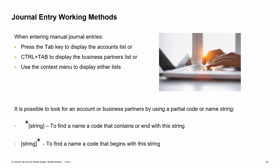When entering manual journal entries, in each line, place the cursor in the GL Account BP Code field and press Tab to display the accounts list, or CTRL+Tab to display the business partner's master data list. Alternatively, you can use the context menu to open the list of accounts or list of business partners. Note that you can search for an account or business partner using the GL Account BP Name field. If you know the first character of the customer code or name, specify it followed by an asterisk, then press CTRL+Tab to produce a list of all customer codes starting with that character.